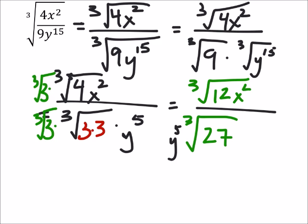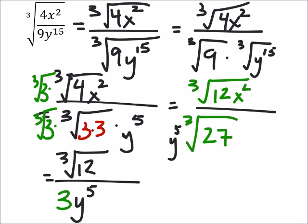In this fraction, looking at the denominator first, I've got the cube root of 27 is 3, I still got that y to the power of 5. In the numerator we've got the cube root of 12x².